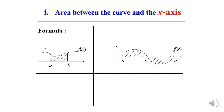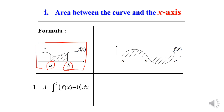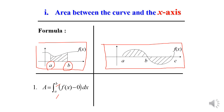For the area between the curve and the x-axis with lower limit a and upper limit b above the x-axis, the formula is area equals the integration of f(x) minus 0 dx from a to b. If the region spans both above and below, the formula becomes: integration of f(x) minus 0 dx from a to b, plus the integration of 0 minus f(x) dx from b to c.